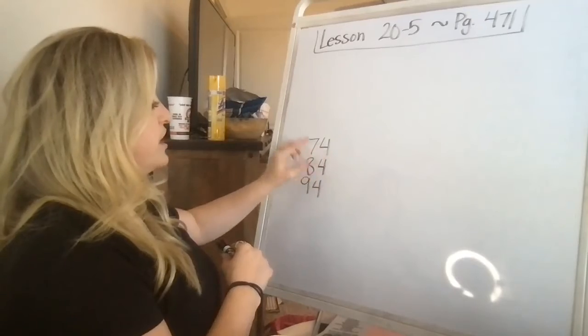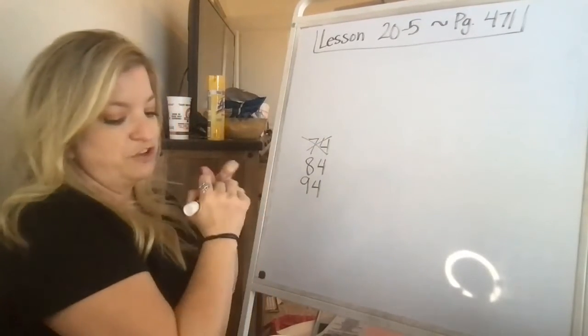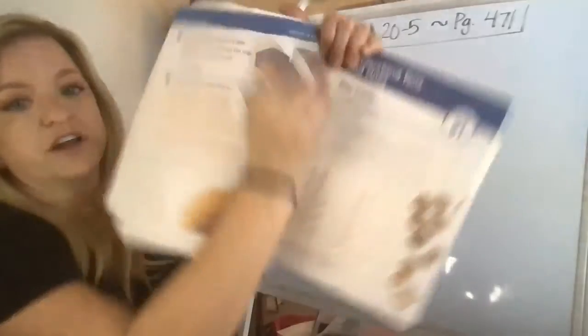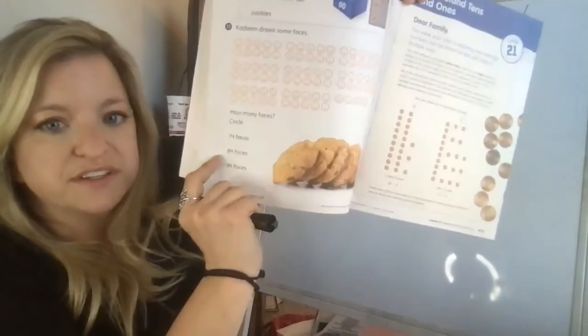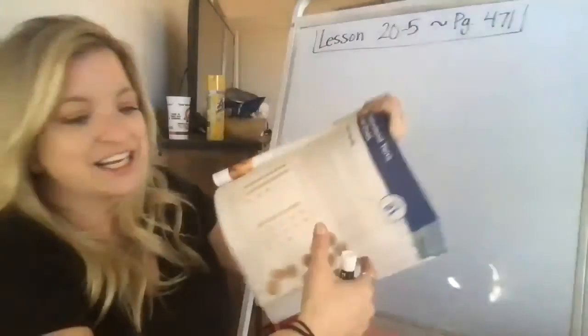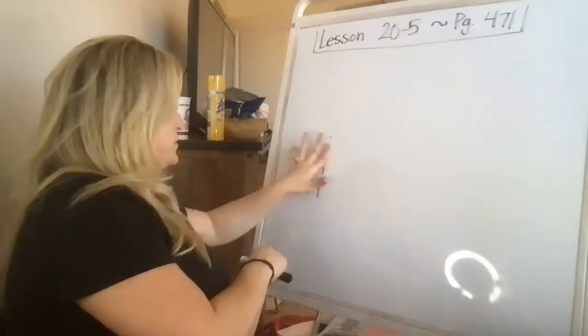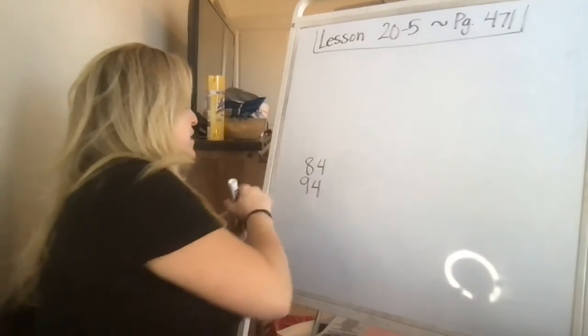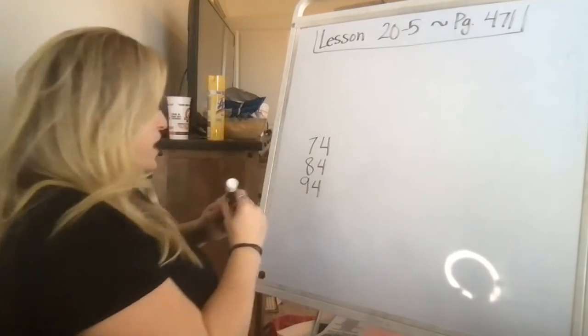But if this was like 75, I could rule out 75 as being wrong because there's only 4 left over. And I'll show you what I mean. See these 4? 1, 2, 3, 4. If this said 75, I could say, oh, I know that's not it because there's 4, not 5. But they all have 4s in the ones place. So it's okay.